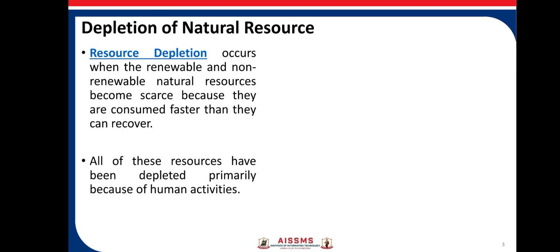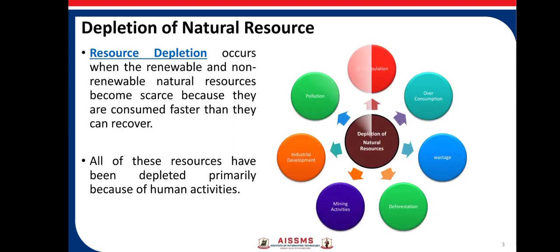What is deflection of natural resources? Deflection occurs when renewable and non-renewable natural resources become scarce because they are consumed faster than they can recover. All of these resources have been depleted primarily because of human activity. Human activities driven by greed are the main cause of deflection of natural resources.